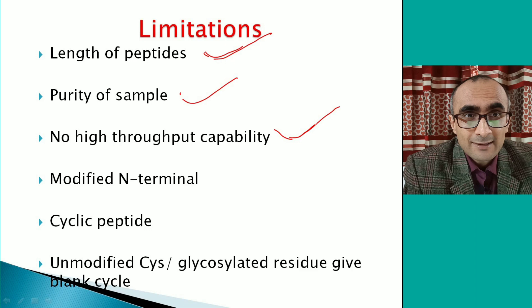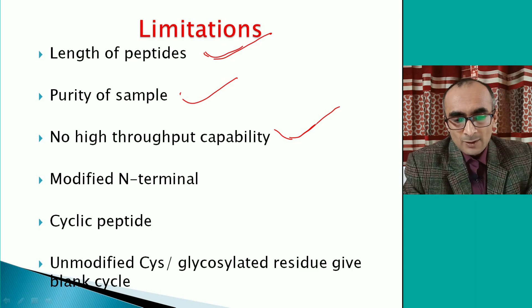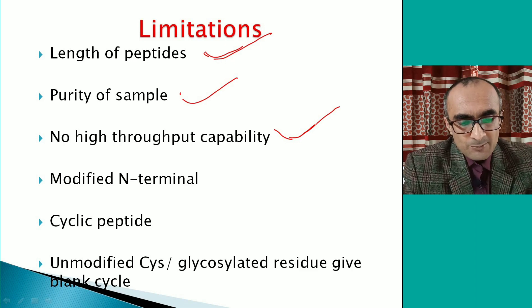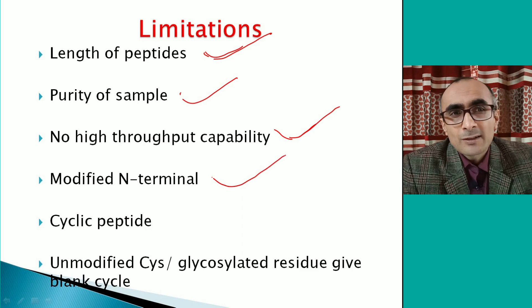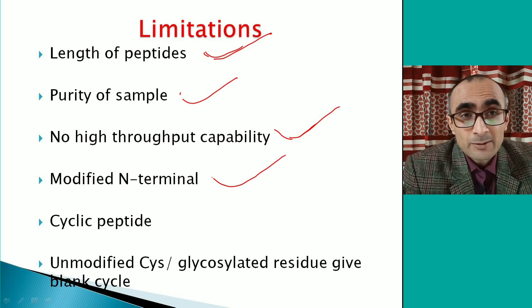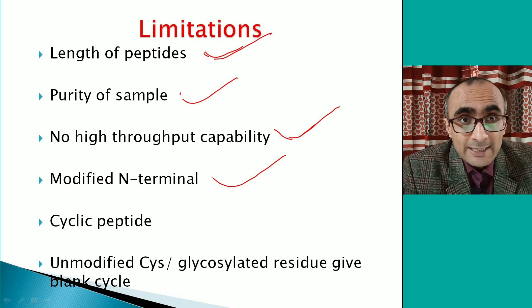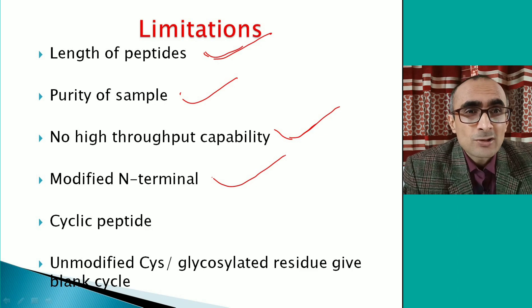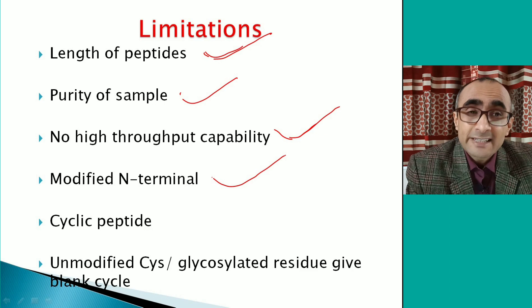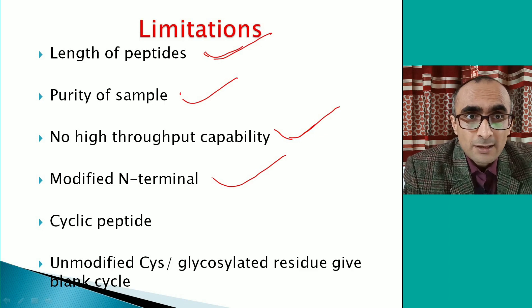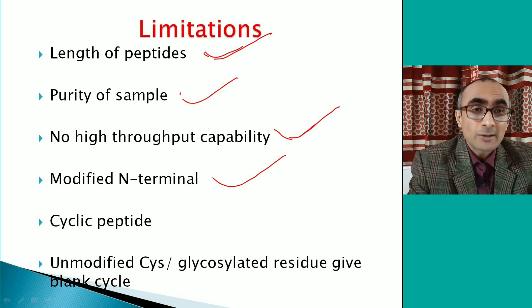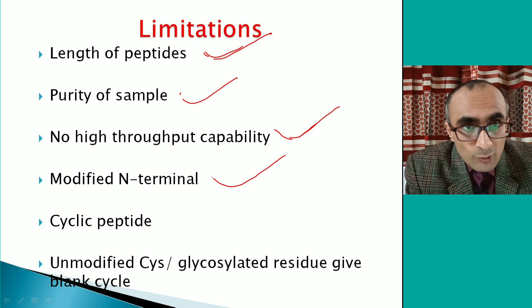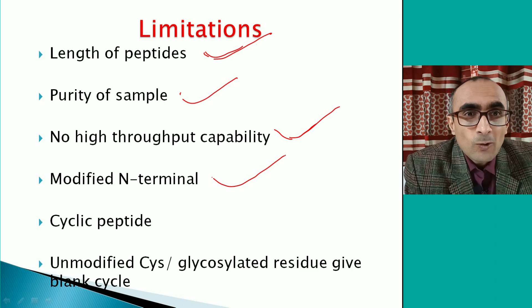Sometimes the N-terminal alpha-amino group of a protein or peptide is modified. In the Edman method, phenylisothiocyanate (PITC) reacts with the free alpha-amino group. If that amino group is not free — for example, if it has been acetylated or formylated — then in those cases where the N-terminal alpha-amino group is modified, this method will not work.